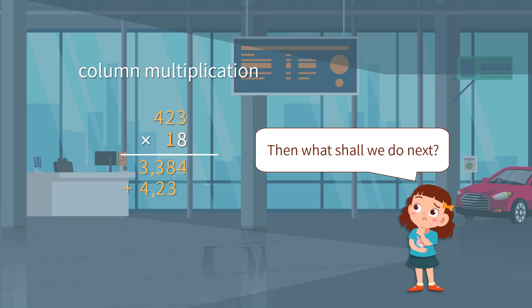This is because we are actually doing 423 times 10, as 18 is separated into 10 plus 8. We add 0 on the ones place to show this.